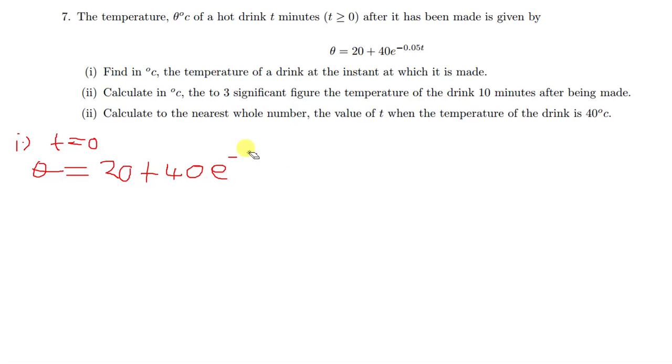This part here, e raised to power zero. Any number raised to the power zero is simply just one. When you multiply 40 times one, you just get the same 40.